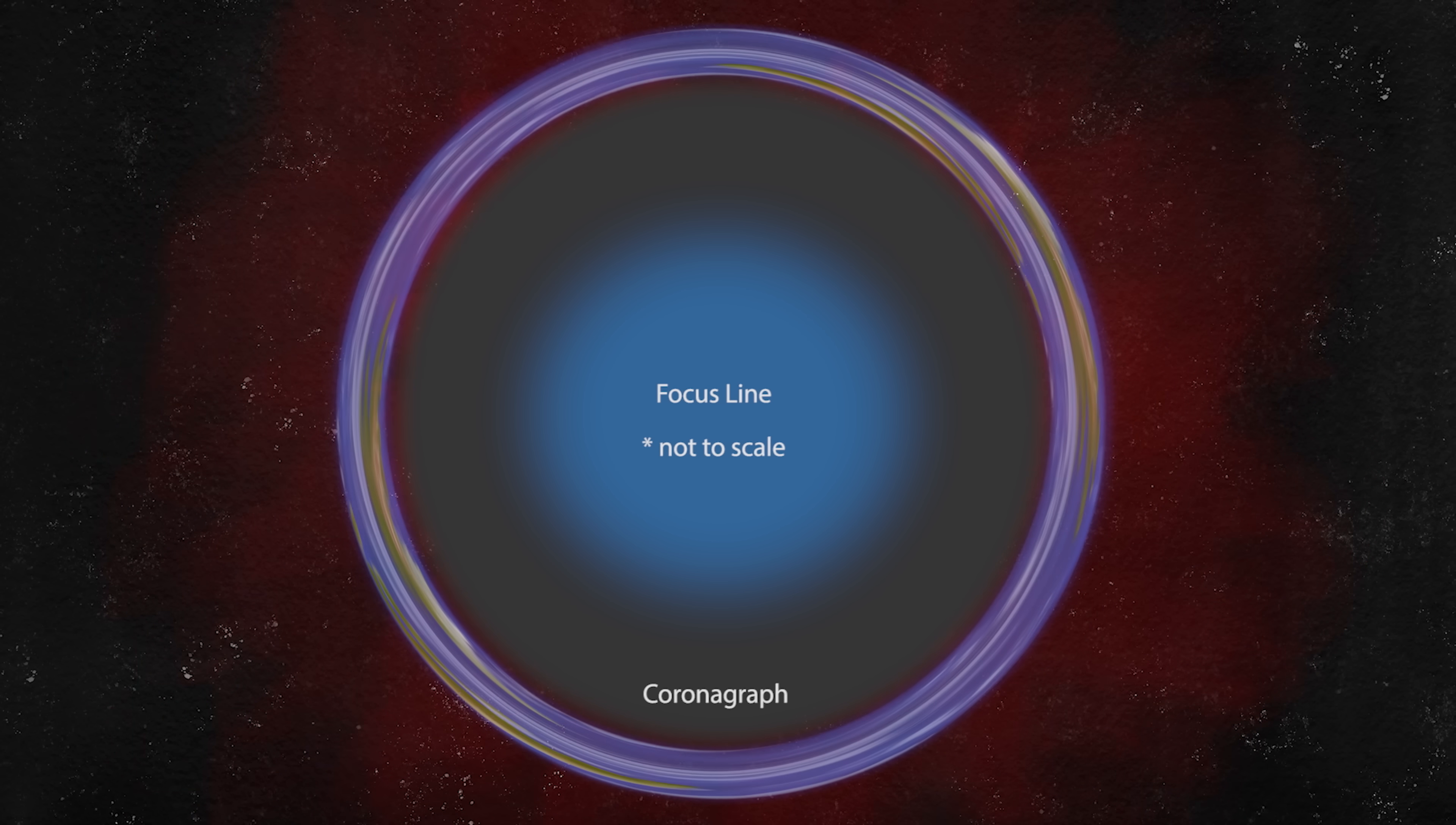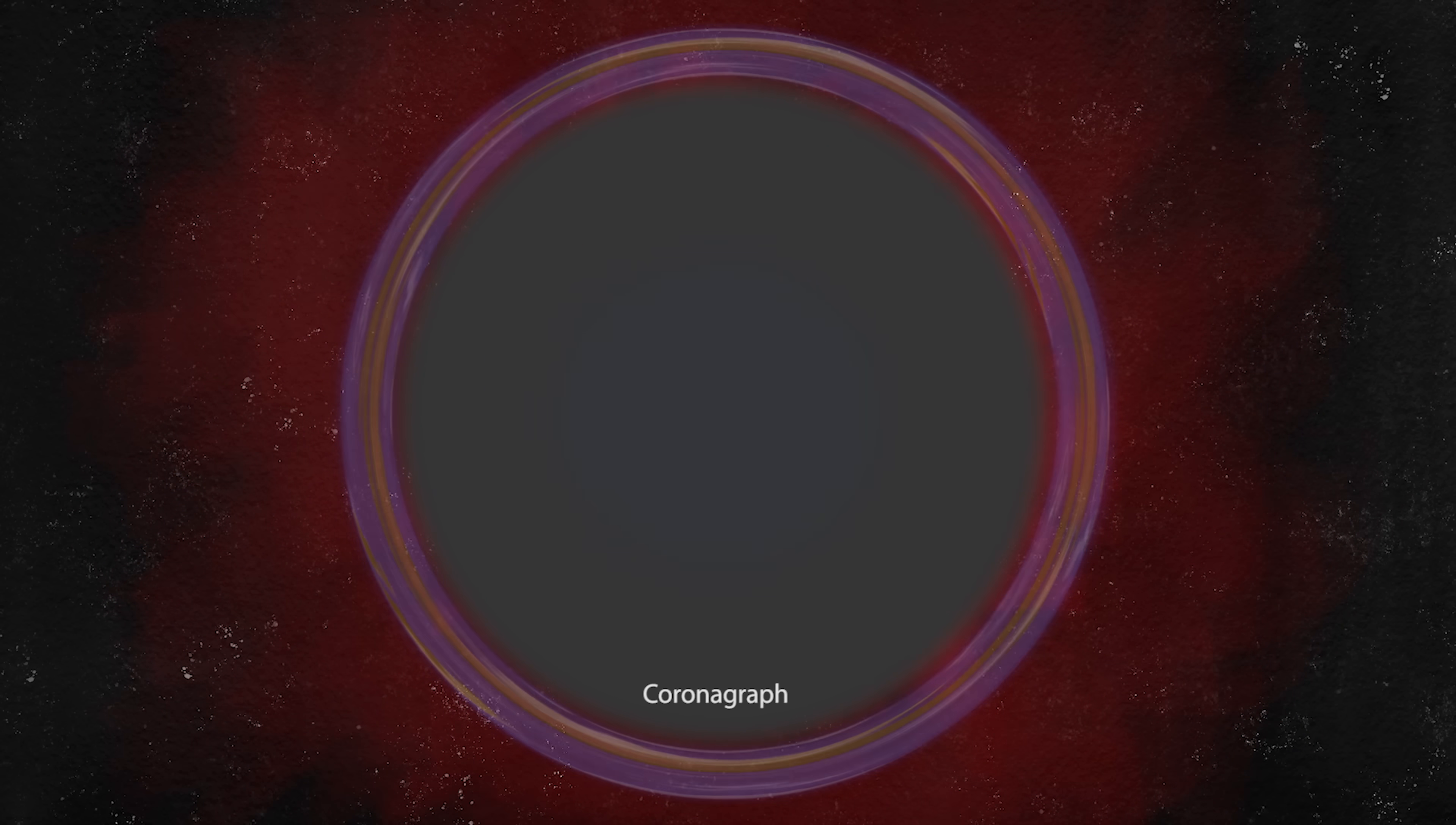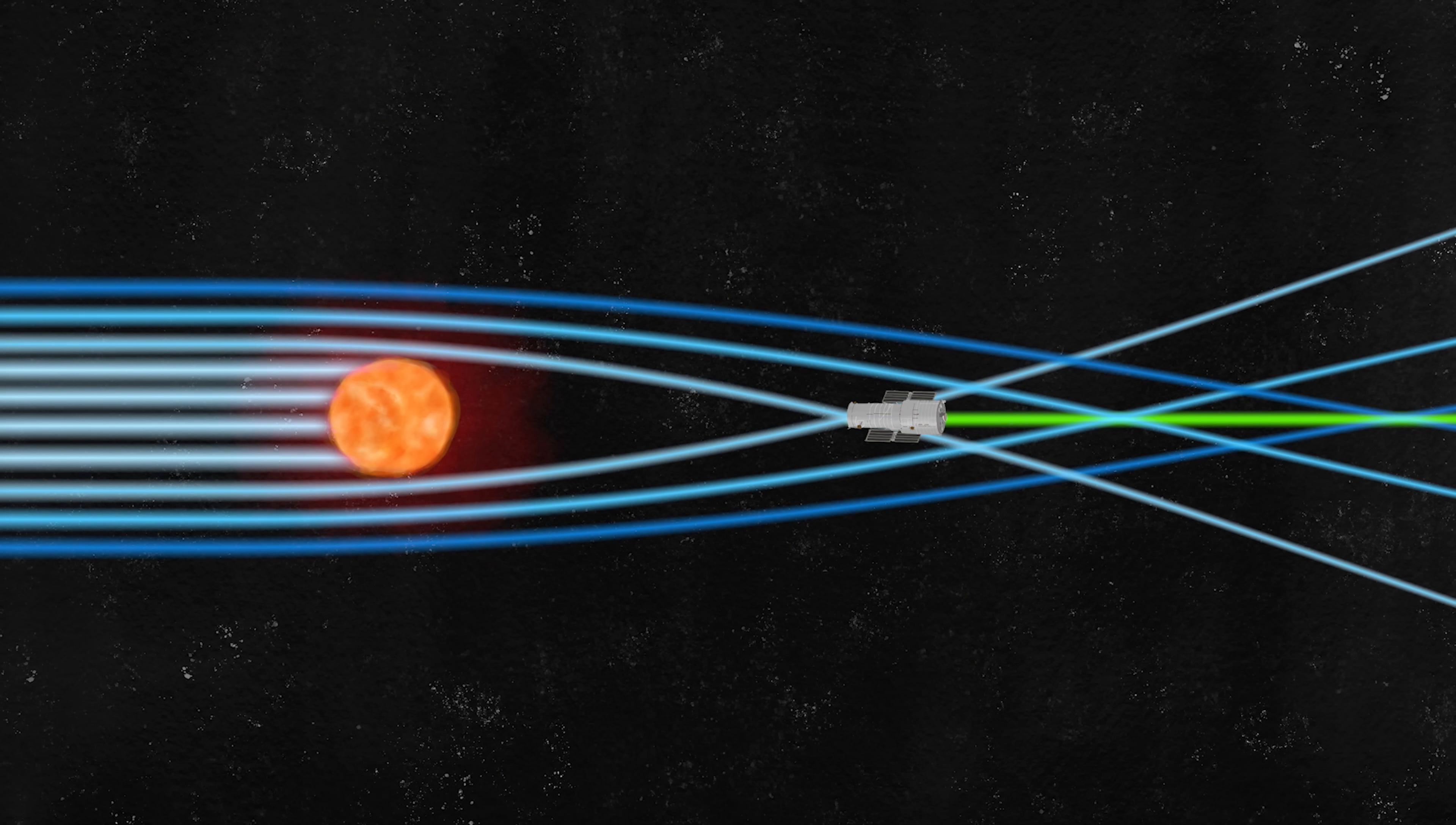There will still be some light from the corona mixed in, but not enough to completely overwhelm the exoplanet's light. For the coronagraph to be more effective, the telescope needs to be positioned further back on the focus line. That's why we can't place the telescope right at 550 AU, but still not too far back, as that could add years to the mission timeline. A good compromise would be between 650 to 800 AU.